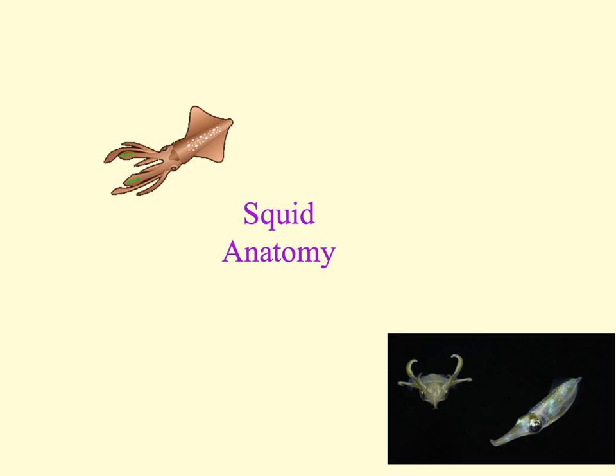Molluscs have a complete digestive system consisting of both a mouth and an anus. They have an open circulatory system, except for the cephalopods including the squid, which have a closed circulatory system. This means the squid will have a heart and blood vessels for transport. Aquatic molluscs such as the squid also use gills, sometimes called the ctenidia, which are flattened structures that occur in pairs. In the squid, the shell is reduced to an internal structure called the pen, and squids are dioecious, meaning male and female structures are located on separate individuals.